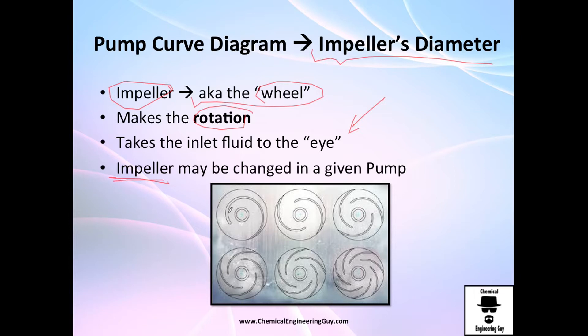So it is very important to know that the impeller size may be changed. For example, you have this casing and the maximum size maybe is eight inches, but you may operate with six inches or four inches and so on.